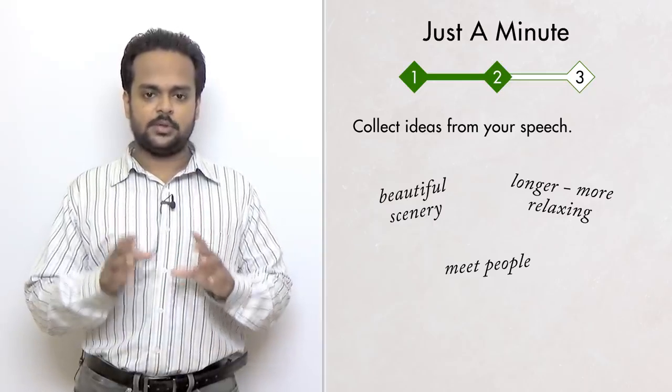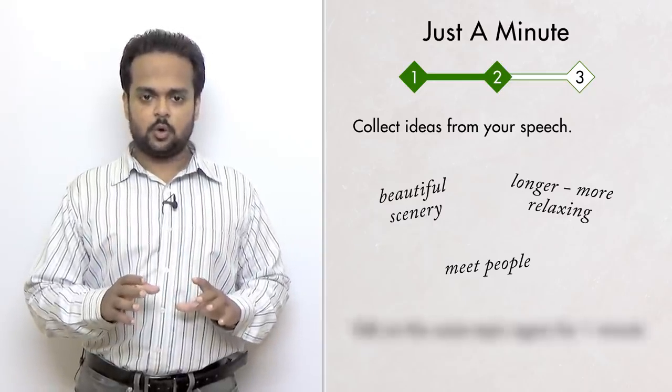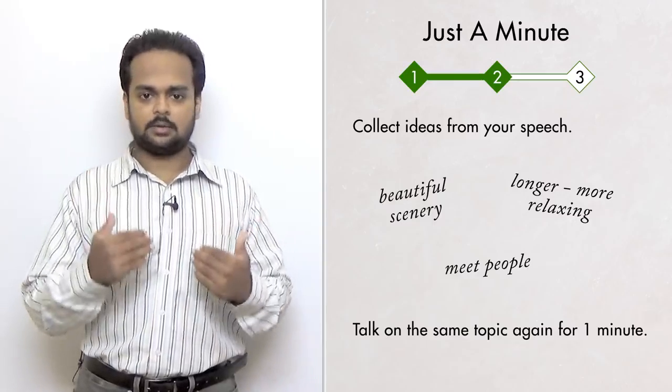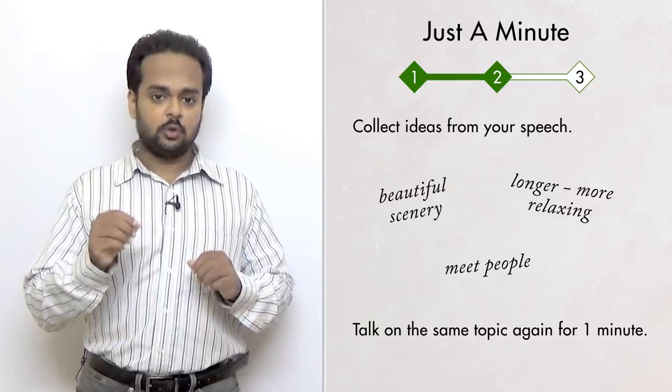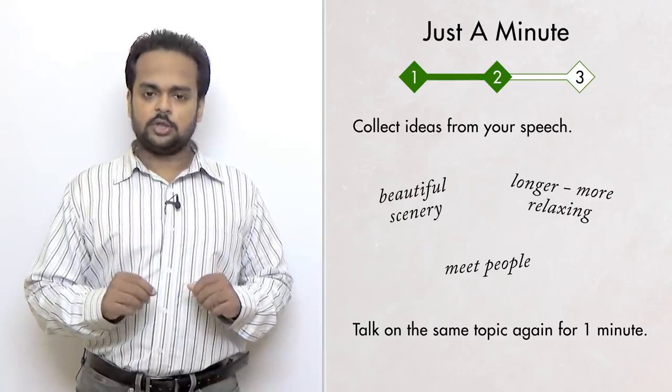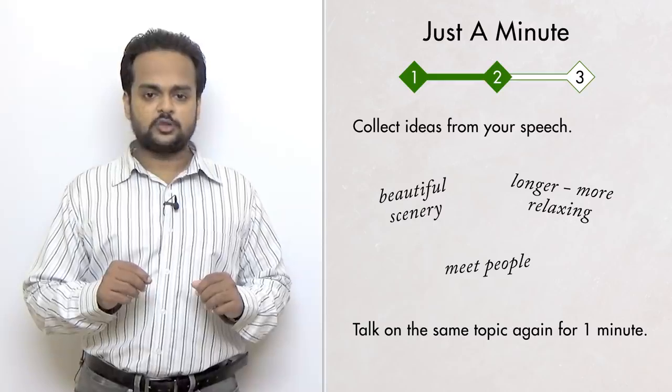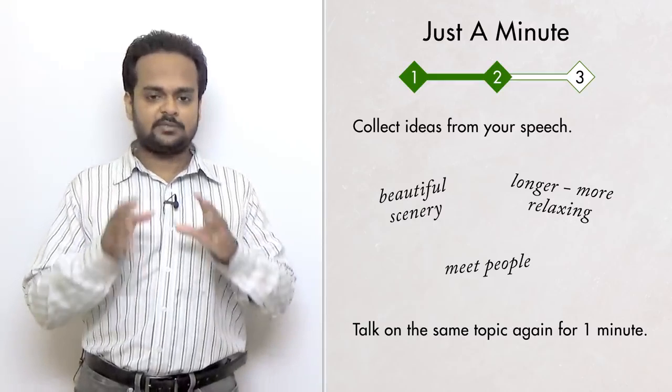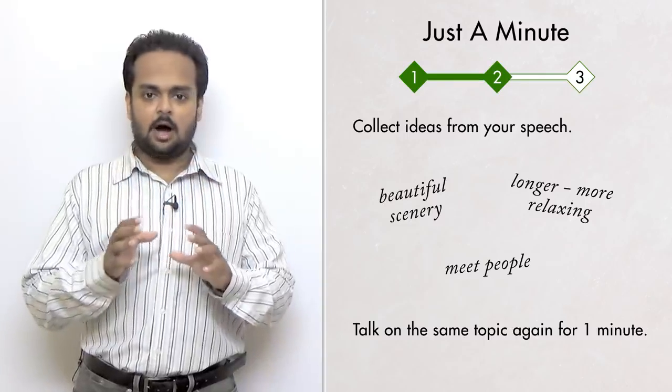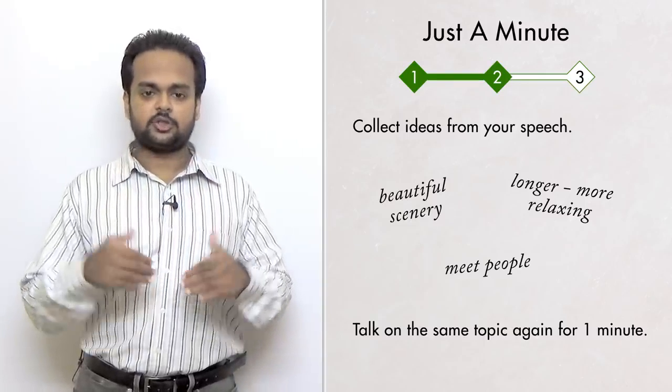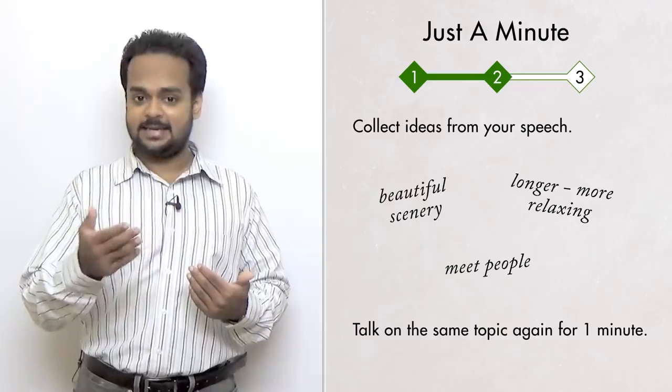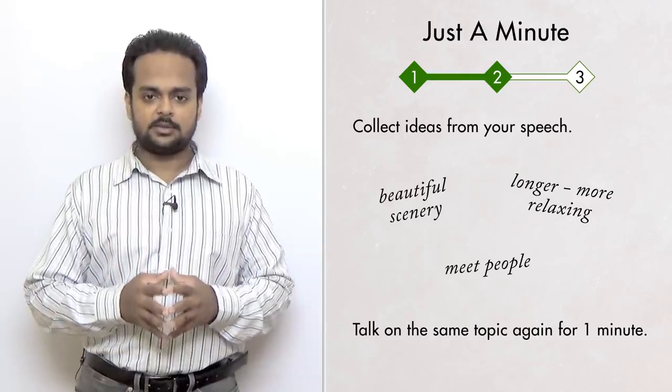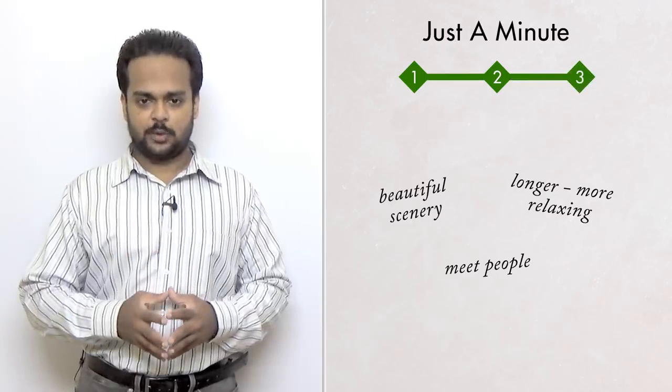So once you have these ideas down, you're going to repeat the exercise. That means you're going to set your timer for one minute and you're going to speak again on the same topic. But now, you can use your notes to guide you. You will notice that this time you are actually able to speak more fluently because you have some good ideas on paper and you will be able to expand on your ideas and give more information. Once the timer hits one minute, you stop. And we move on to stage three.